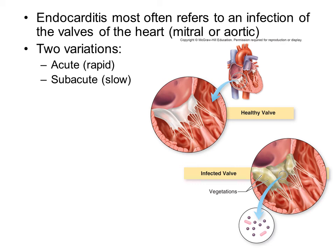Endocarditis most often refers to an infection of the valves of the heart. There are two variations we will discuss: acute endocarditis and sub-acute endocarditis. The difference is that acute occurs very rapidly and sub-acute occurs very slowly.